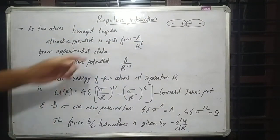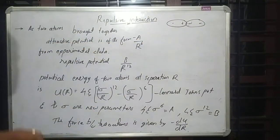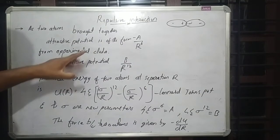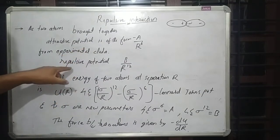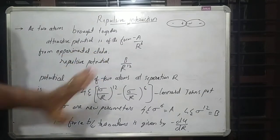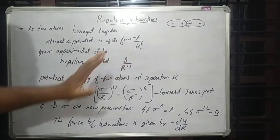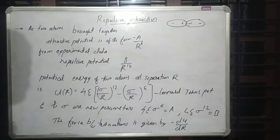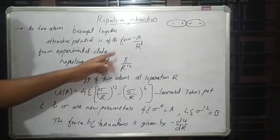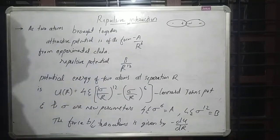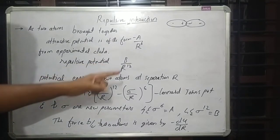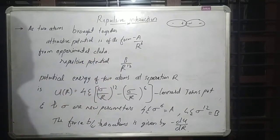From experimental data we get the repulsive potential as B over R raised to 12. B over R raised to 12 is the repulsive interaction energy.